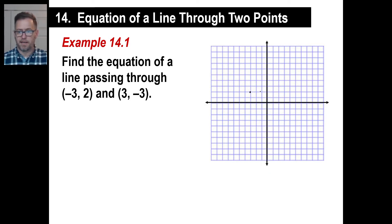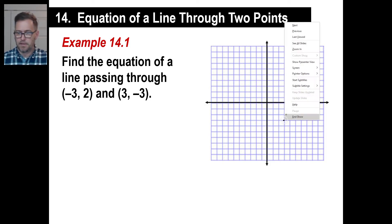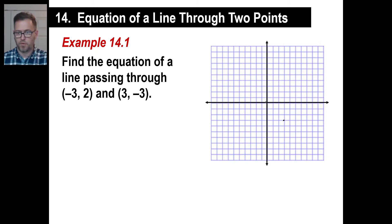The second point is three, negative three. So go one, two, three, and then one, two, three. There we go. You can go ahead and just connect those two dots in a nice straight line.